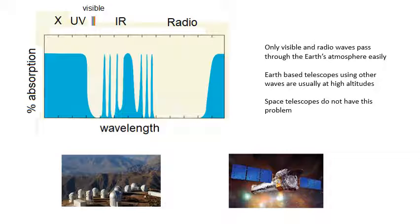On Earth, Earth-based telescopes which use other wavelengths are usually at high altitudes. The photograph on the left there is in Chile, a big observatory in Chile, which is on top of a mountain. And then there's less atmosphere above you, and there's less moisture in the atmosphere.